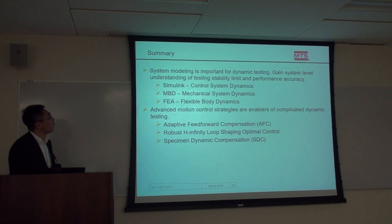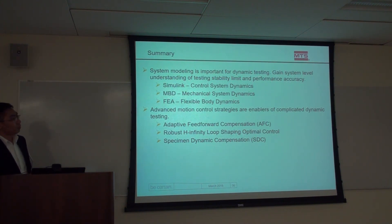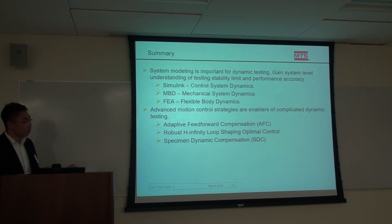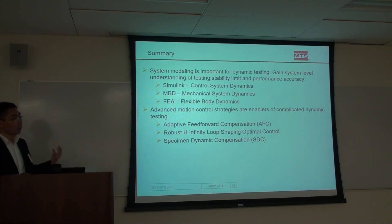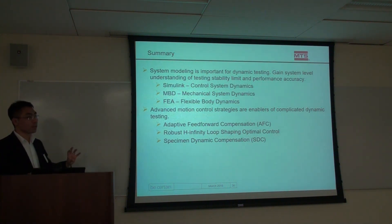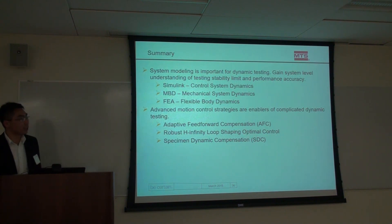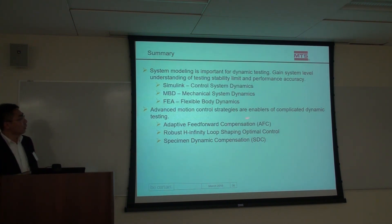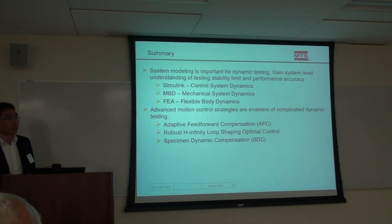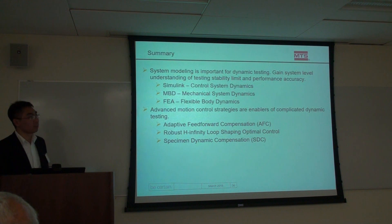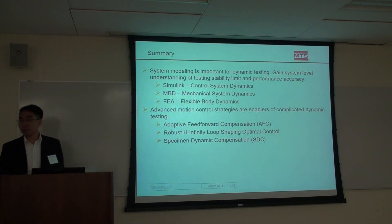In summary, system modeling is important for advanced dynamic testing. Our goal is to gain system understanding about performance limits and achievable accuracy. There are many modeling tools — Simulink, Adams, robust modeling — each with different strengths for different subsystems. For advanced motion control, techniques like ATS, H-infinity loop shaping, and SDC are key enablers for highly complex testing scenarios. Thank you — I think we're right on time.